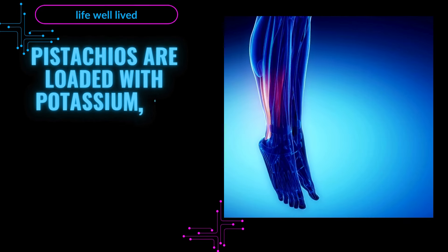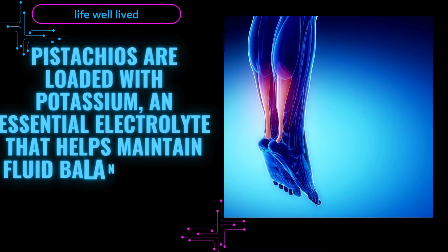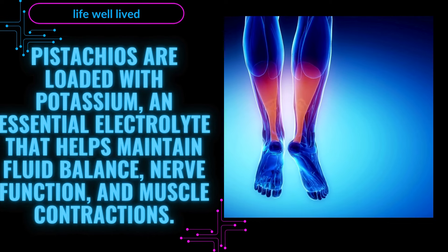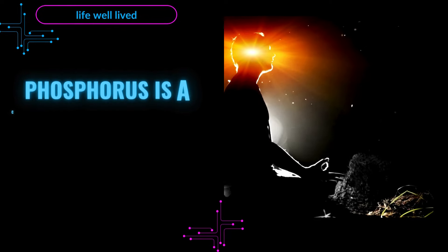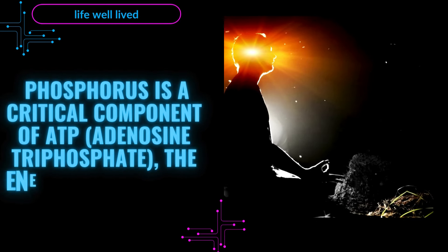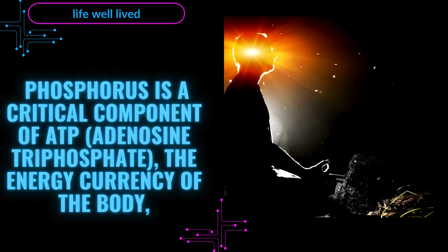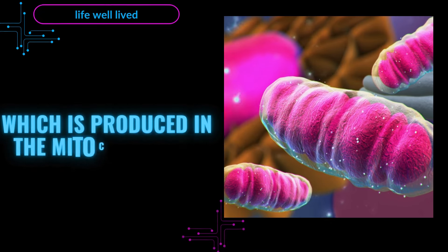Pistachios are loaded with potassium, an essential electrolyte that helps maintain fluid balance, nerve function, and muscle contractions. Phosphorus is a critical component of ATP, adenosine triphosphate, the energy currency of the body which is produced in the mitochondria.